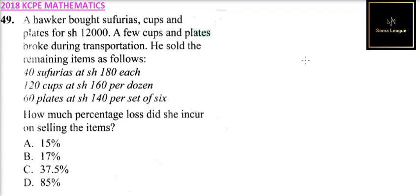Question number 49. We are told a hawker bought sufurias, cups and plates for 12,000 shillings. A few cups and plates broke during the transportation. He sold the remaining items as follows.